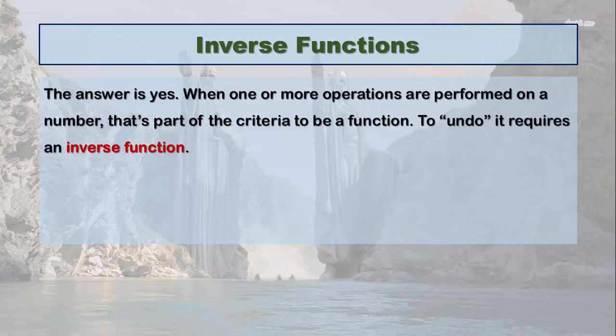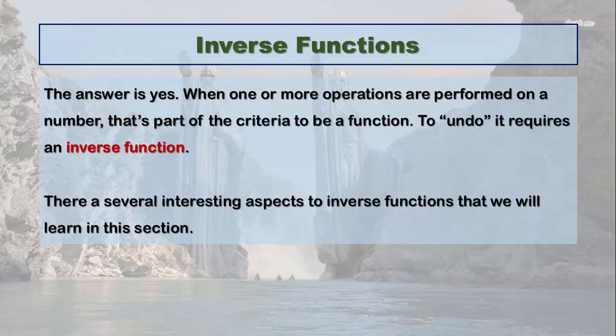When one or more operations are performed on a number, that's part of the criteria to be a function. So to undo it requires an inverse function, not a single operation, but possibly a combination of operations, and that is the inverse function. Now, there's several interesting aspects of functions that we're going to learn about in this section.